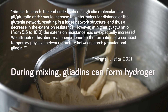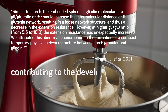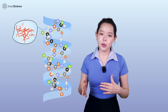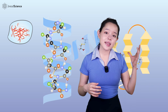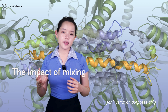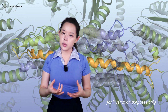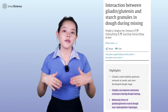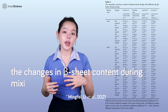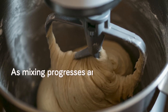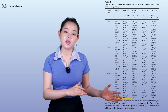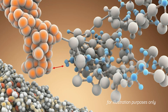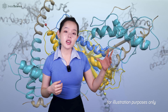During mixing, gliadins can form hydrogen bonds with starch granules, contributing to the development of a temporary physical network that influences dough properties. However, this network is generally less stable than the one formed by glutenin later on, and excessive mixing can disrupt these bonds. The impact of mixing on beta sheet content appears to be influenced by the ratio of gliadin to glutenin in the dough. As mixing progresses and becomes excessive, the beta sheet content may decrease due to the depolymerization of glutenin macropolymers. The mechanical stress from overmixing could disrupt the hydrogen bonds and other interactions that stabilize the beta sheet structure, leading to a less ordered conformation.